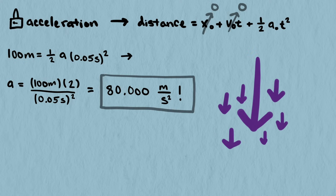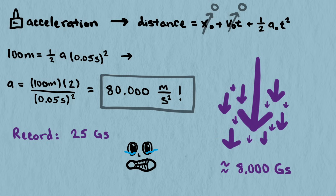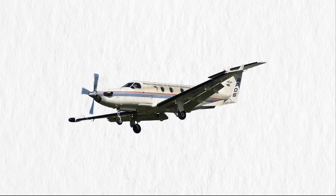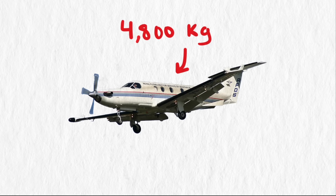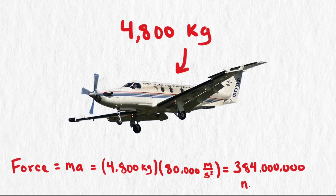An acceleration that would kill anyone not living in a cartoon — that's about 8,000 times the force of gravity. The highest survived force on record is 25 times gravity for one second, with a peak of about twice that. These cartoon characters are amazing. Now, if we assume the spaceship weighs the same as a private jet — like a Pilatus PC-12, coming in at 4,800 kilograms — we can find the force it takes to accelerate at that rate. Force equals mass times acceleration, and the acceleration of gravity is negligible here. So our force is 4,800 kg × 80,000 m/s² = 384 million newtons.